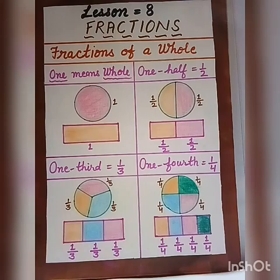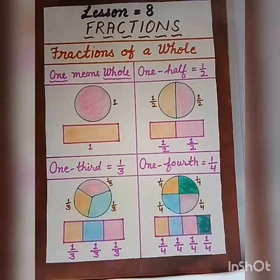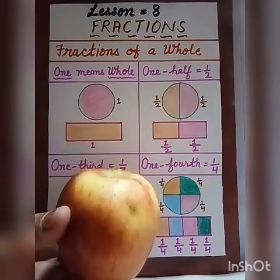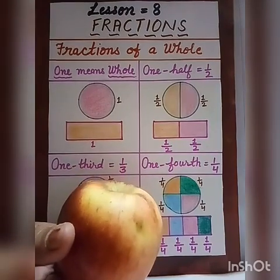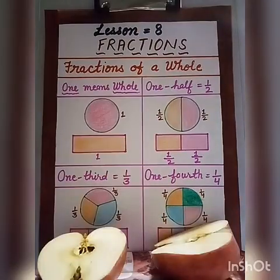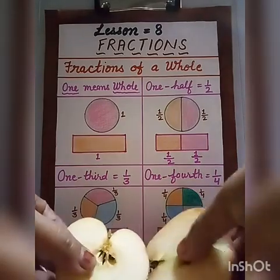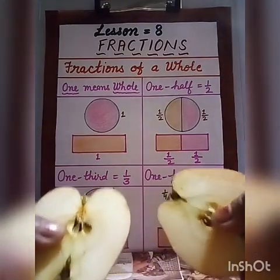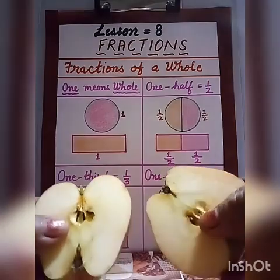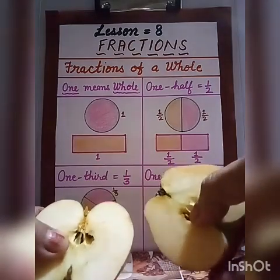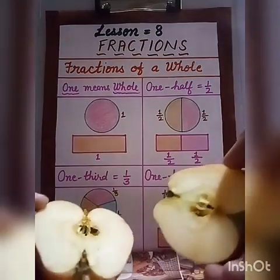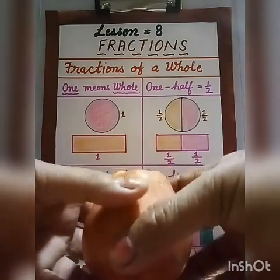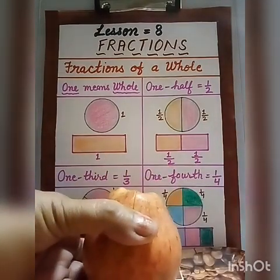In the next figure there are four parts and all the parts are equal. It means in a fraction the parts should be equal. Let's take an example of an apple. It is a whole apple. Now I have cut it into two parts - I have two halves. Both the parts are equal, and two equal halves make a whole.